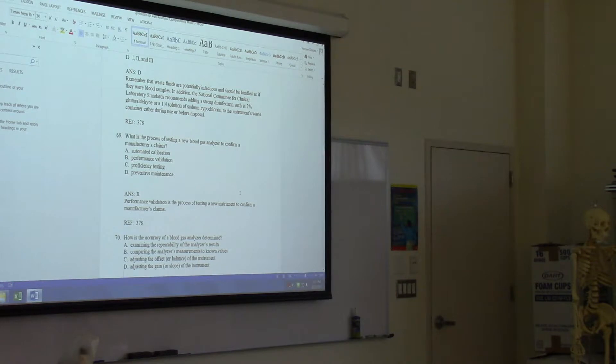How is the accuracy of a blood gas analyzer determined? Examine the repeatability of the analyzer's results, compare the analyzer's measurements to known values, adjust the offset or balance of the instrument, or adjust the gain or slope of the instrument. Okay, compare the analyzer's measurements to known values.